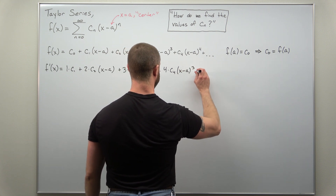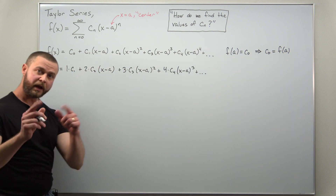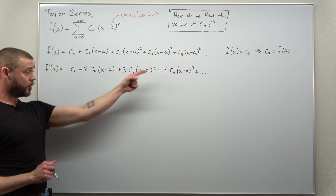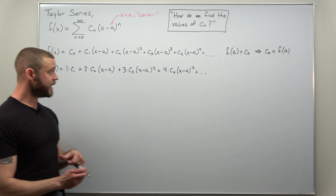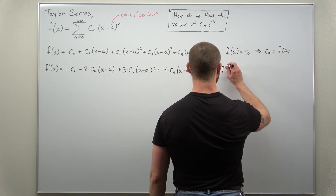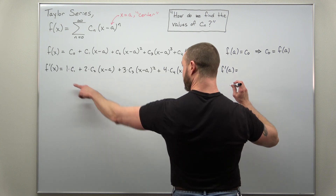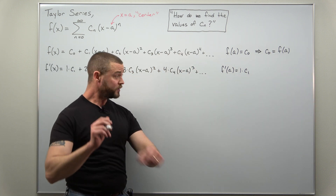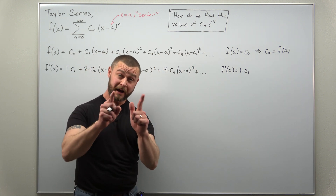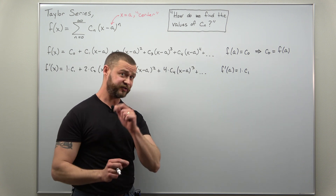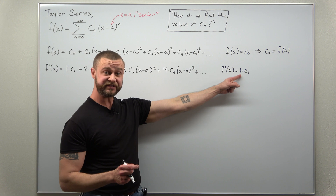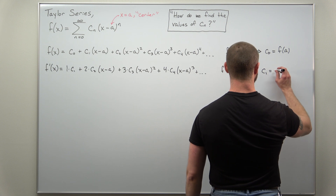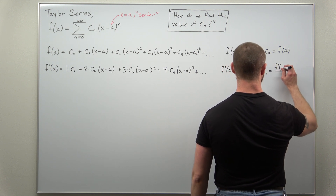Just as before, we plug in x equal to a. Everything from the second term on evaluates to 0. On the left we get f prime of a, and on the right we get 1 times c sub 1. Dividing by 1, we get c sub 1 equals f prime of a divided by 1. I'm keeping the multiplication by 1 explicit so the pattern will be visible.